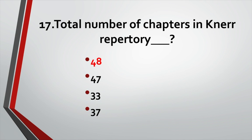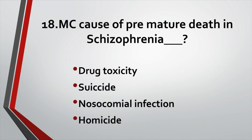Most common cause of premature death in Schizophrenia: Option A: Drug toxicity. Option B: Suicide. Option C: Nosocomial infection. Option D: Homicide. Answer: Option B, Suicide.